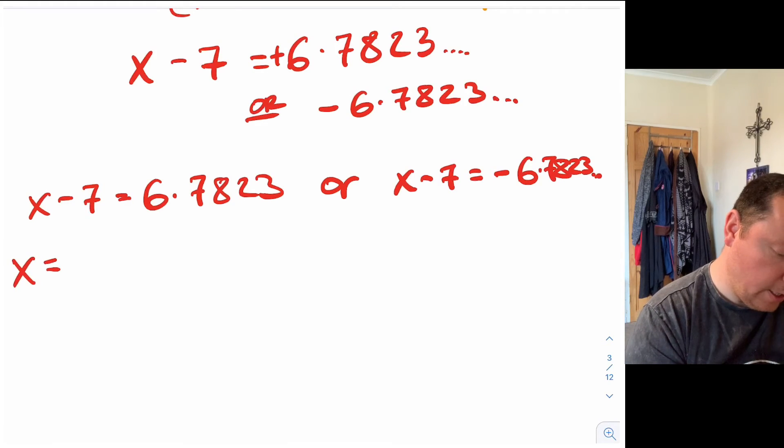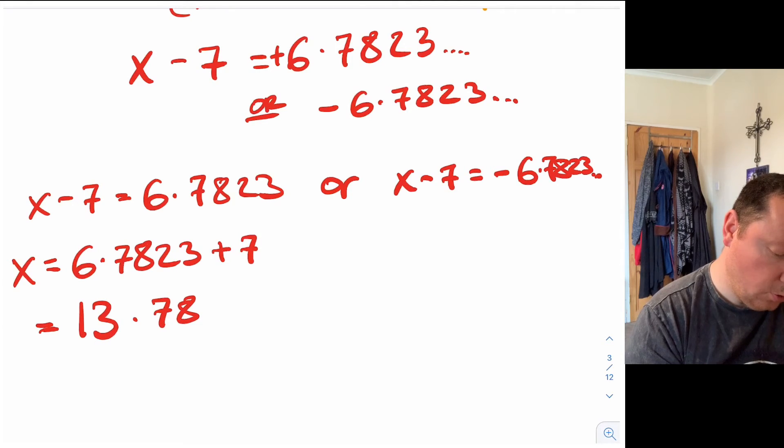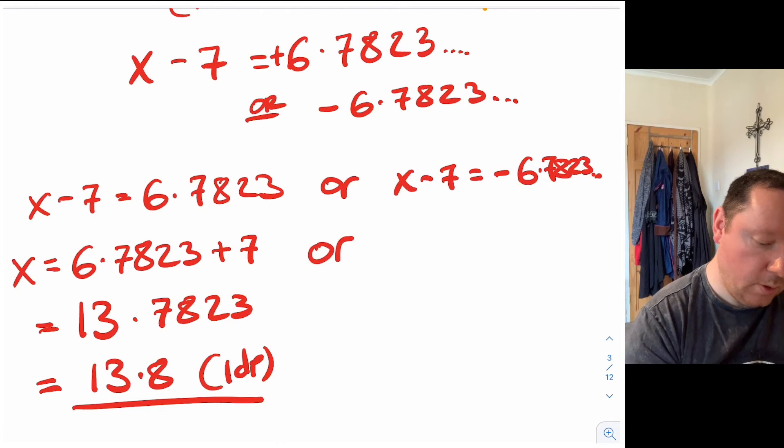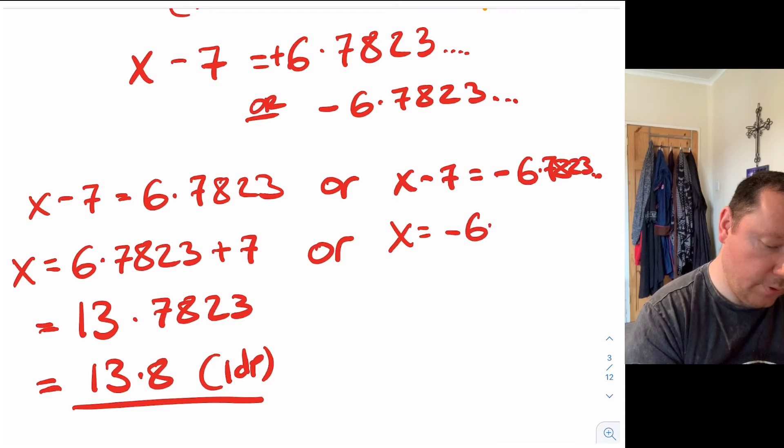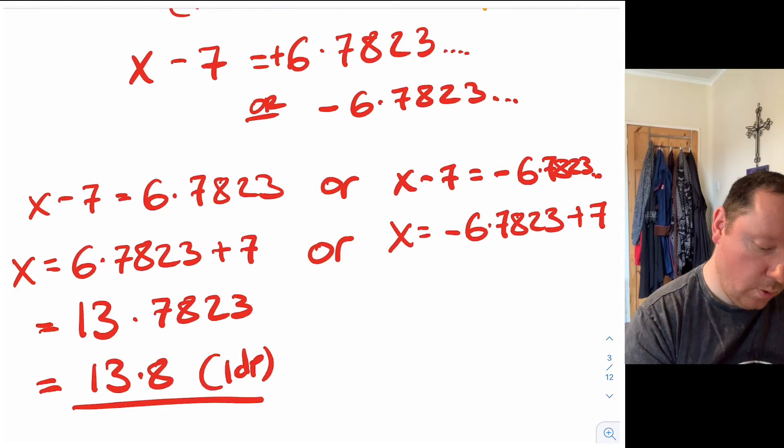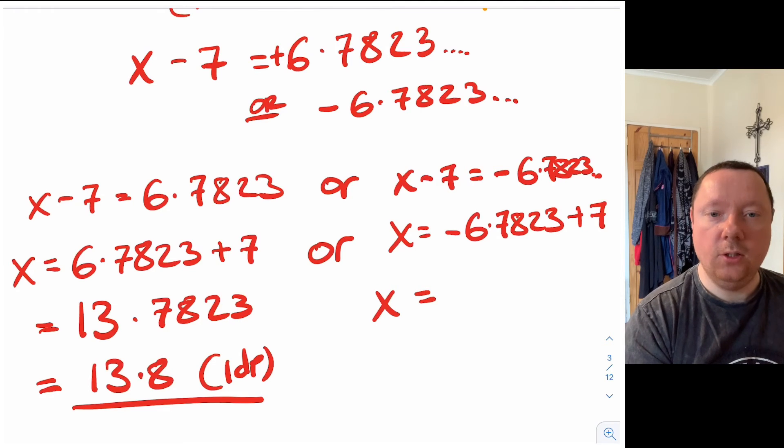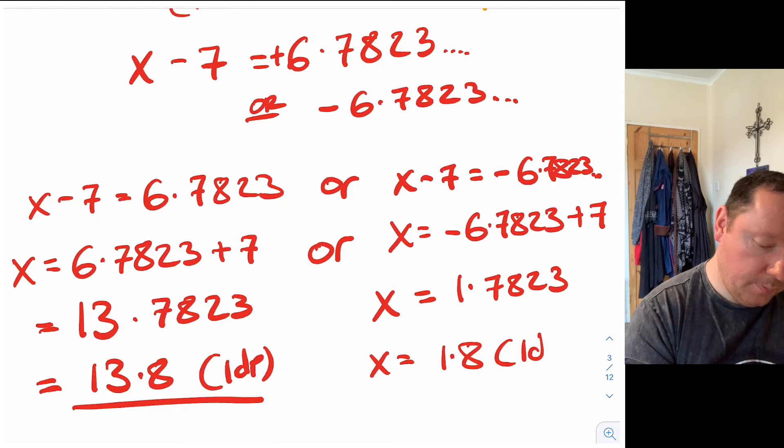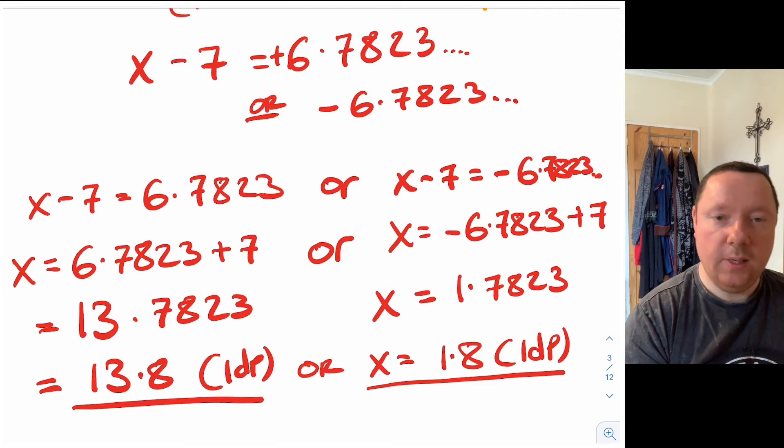So to get our final answer we just move the 7 across for both equations. So x equals 6.78233 plus 7 which is 13.78233 or to one decimal place 13.8 correct to one dp. There's your first answer. Or for the next one x equals minus 6.78233 plus the 7, so x equals 1.78233 which equals 1.8 correct to one dp. And there is my two solutions.